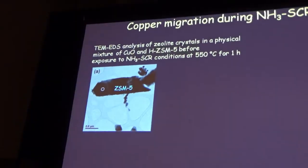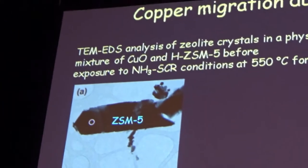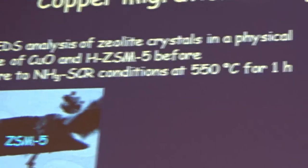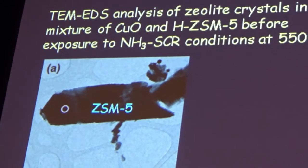During the years we have seen signs that copper might migrate, especially when exposed to ammonia SCR conditions. There are several studies; we mention two. A study made by Peter Wennerström at Haldor Topsoe and co-workers, together with Amir Corma in Spain, studied physical mixtures: they mixed ZSM-5 powder with copper oxide, then exposed that to ammonia SCR conditions—NO, ammonia, oxygen, and water—for one hour at 550 degrees Celsius.